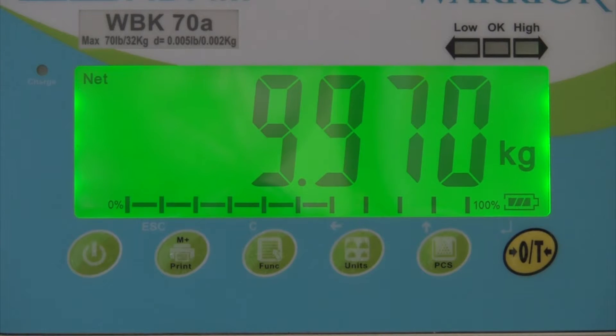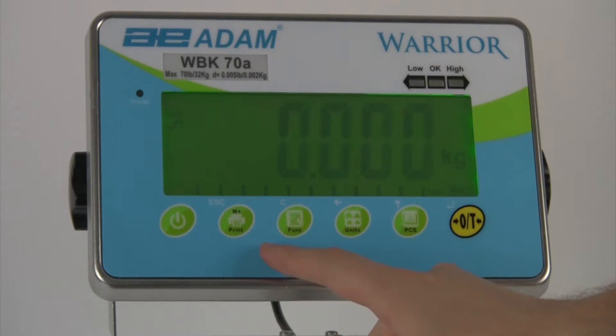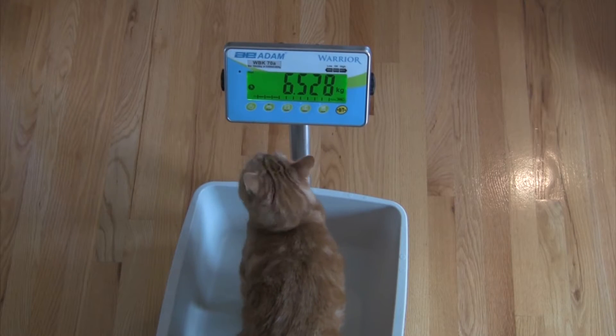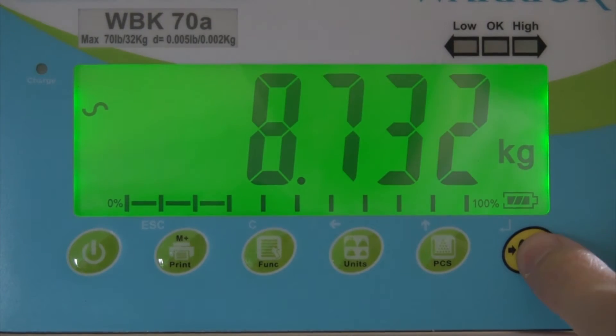The Warrior's versatile indicator boasts one of the largest displays in the industry for washdown scales, with excellent viewing from any angle. It offers a variety of built-in applications including check weighing, parts counting, percentage weighing, and dynamic or animal weighing.